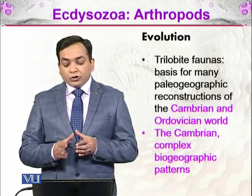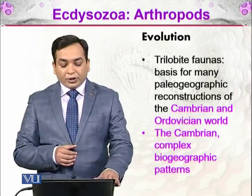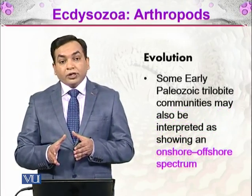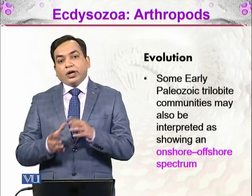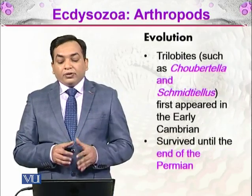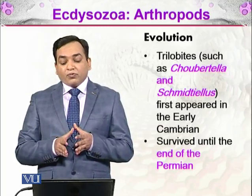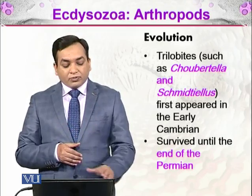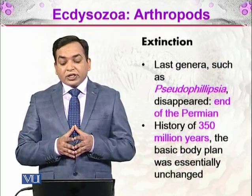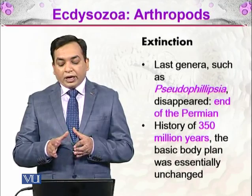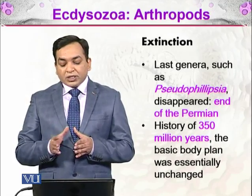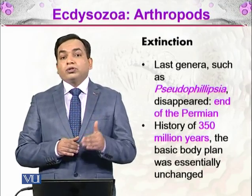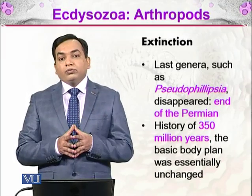Complex biogeographical patterns can be seen in trilobites during the Cambrian period. Some early Paleozoic trilobite communities may be interpreted as showing an onshore and offshore spectrum, suggesting some trilobites were adapting to terrestrial environments. Trilobites such as Schaubertella and Schmidtidella first appeared in the early Cambrian and survived until the end of the Permian. The last genus, Pseudophilipsia, disappeared at the end of the Permian, and over 350 million years the basic body plan remained essentially unchanged.